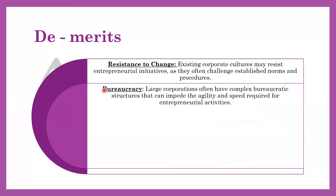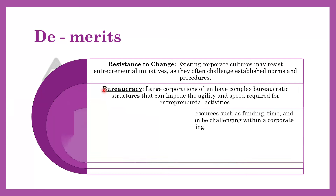Bahut zyada hierarchy hai organization mein. Let's say aapne koi product bana bhi liya, us ka approval lene mein kitna time lagega? Let's say aapko 10,000 chahiye — us 10,000 ke liye kitna approval lega? Because of that hierarchy, aapki speed kam ho jaati hai. Resource Allocation — kai baar organization resources allocate nahi kar paati. Google bahut badi company hai, but what if you are working in a small company? Can you expect your manager to give you lakhs and lakhs of time or money?